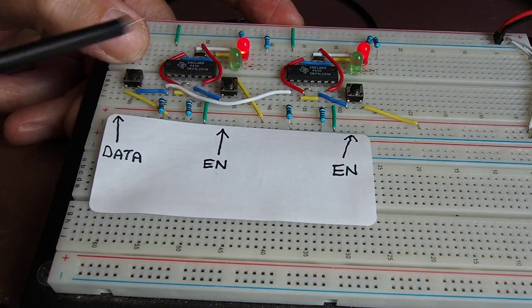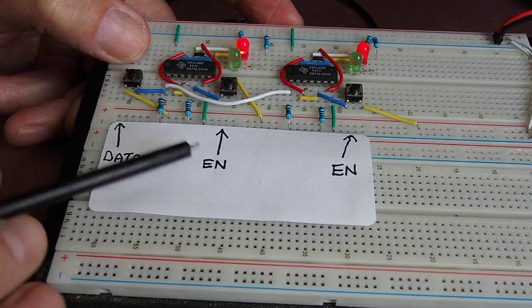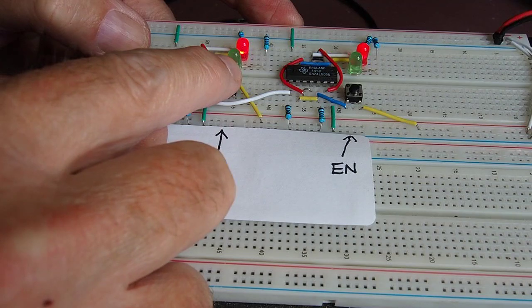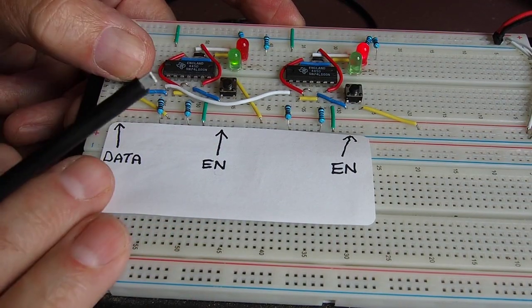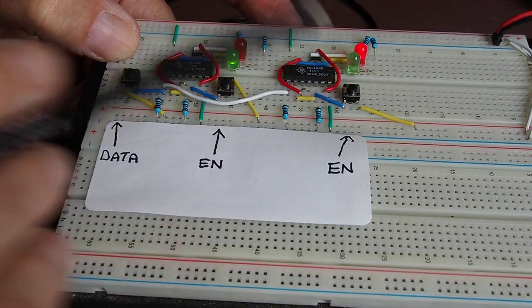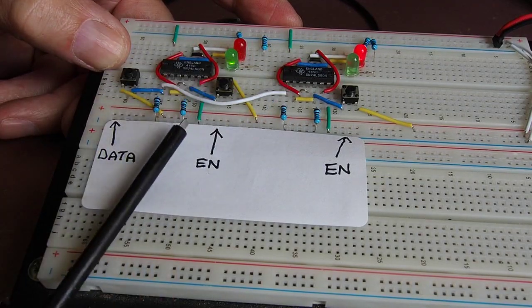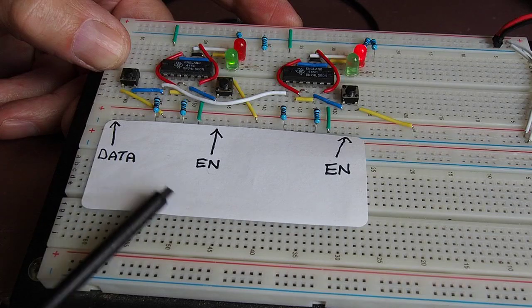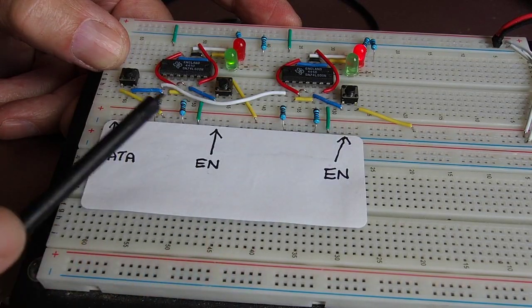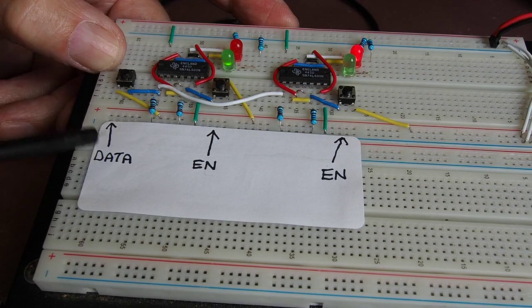The data bus is now actually at logic zero again because I've released the button. If I now, with the data bus on logic zero, briefly enable this location, you can see it drops back down to logic zero. Whatever I do on the data bus makes no difference to either memory location because neither is currently enabled. So what I've created there are two bits of memory storage, and I wanted them to share a common data bus so that you can obviously get an inkling of how they might be used on a computer.